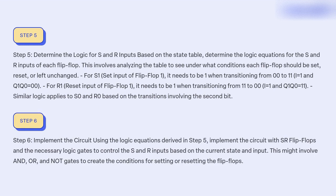Step 6: Implement the circuit using the logic equations derived in Step 5. Implement the circuit with SR flip-flops and the necessary logic gates to control the S and R inputs based on the current state and input. This may involve AND, OR, and NOT gates to create the conditions for setting or resetting the flip-flops.